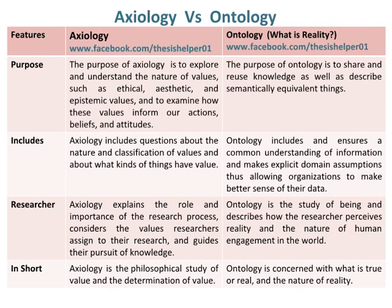Axiology explains the role and importance of the research process, considers the values researchers assign to their research, and guides their pursuit of knowledge. Whereas, ontology is the study of being and describes how the researcher perceives reality and the nature of human engagement in the world.